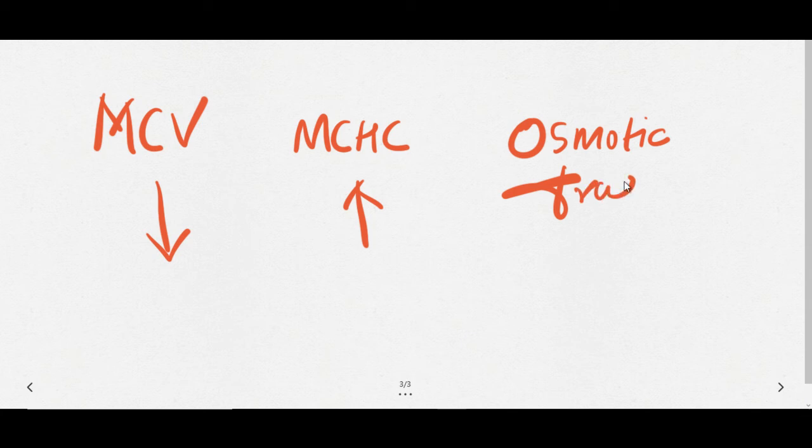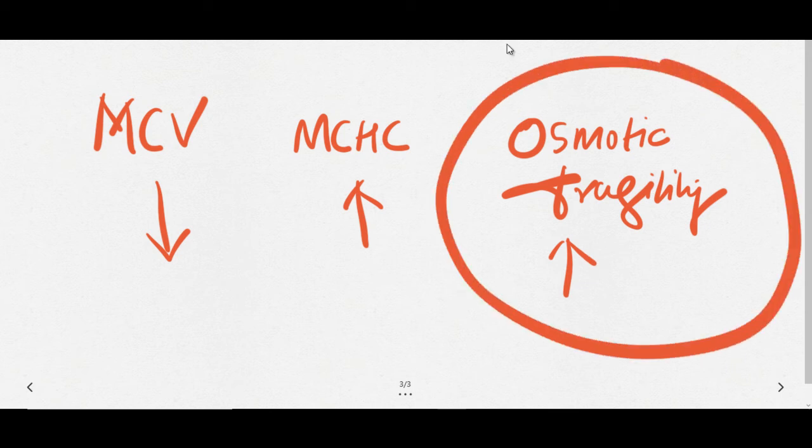Osmotic fragility being high is a very important finding because it means cells are liable to lysis. This is an autosomal dominant disorder.